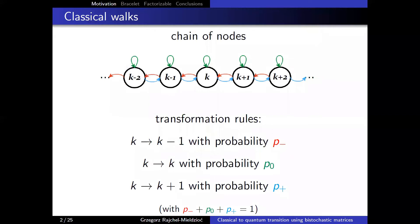This is a mathematical problem but it relates to many problems in physics. Consider a chain of nodes: suppose we are in node k and time is discretized. At the next time step, the system can stay in node k, go back to k minus one, or go to k plus one. These three events have different probabilities that must sum to one — this is a classical simple walk.